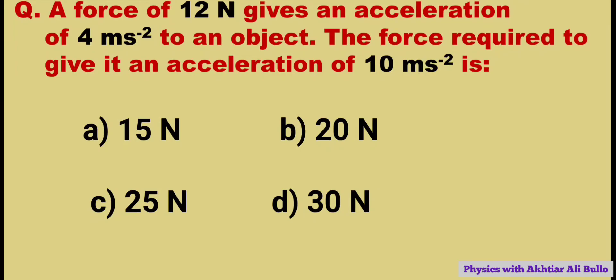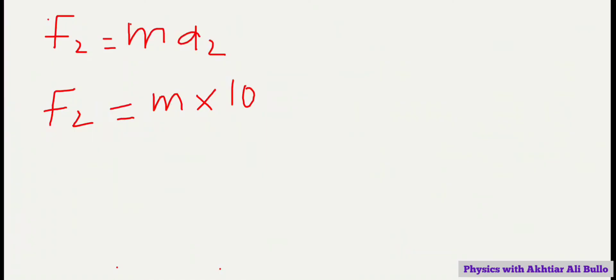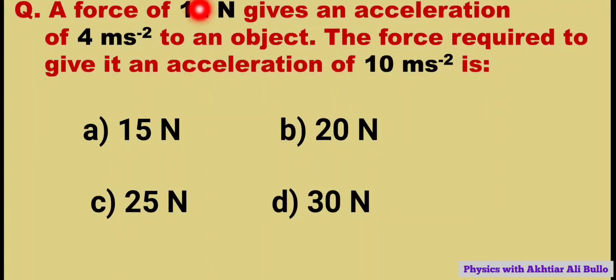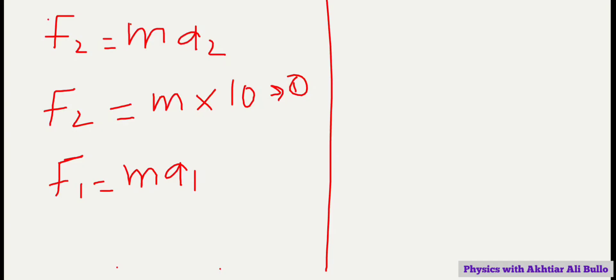We will give it equation number 1. To calculate mass we will use the formula F1 equals m into a1, because F1 is given as 12 newtons and a1 is given as 4 meters per second squared. So by putting the values...